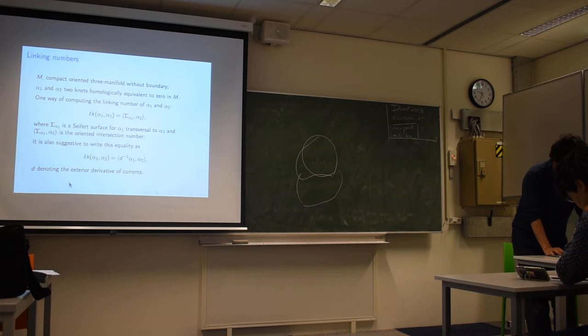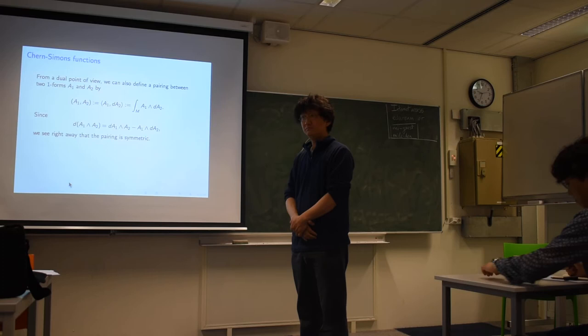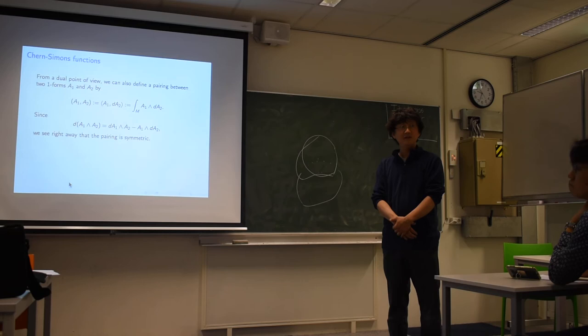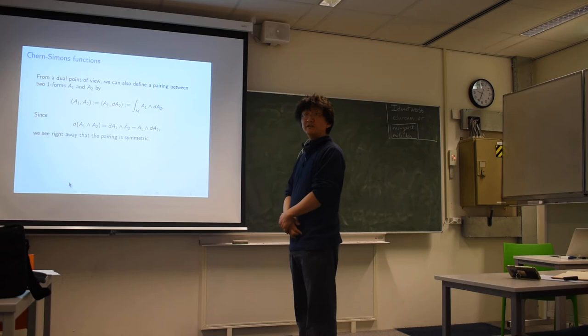I thought I'd describe what this has to do with Chern-Simons theory in this classical setting. From a dual point of view, you can also define a pairing between one-forms A1 and A2 in a more simple-minded way, just by taking A1 wedge product with d of the other form and integrating. That defines a pairing between one-forms that mirrors the pairing between knots. And because of this formula and the exterior differential, you see that this product between one-forms is symmetric.